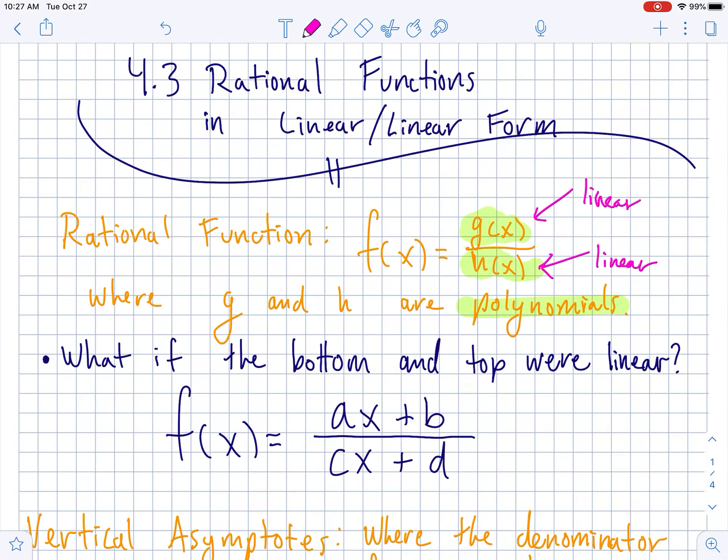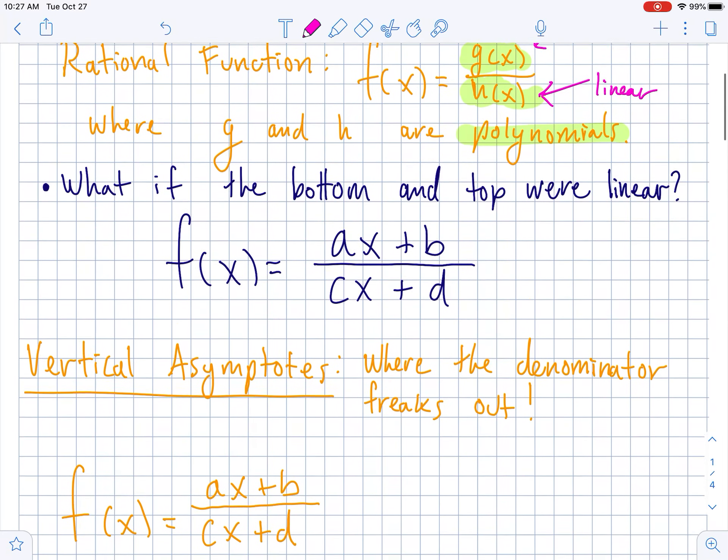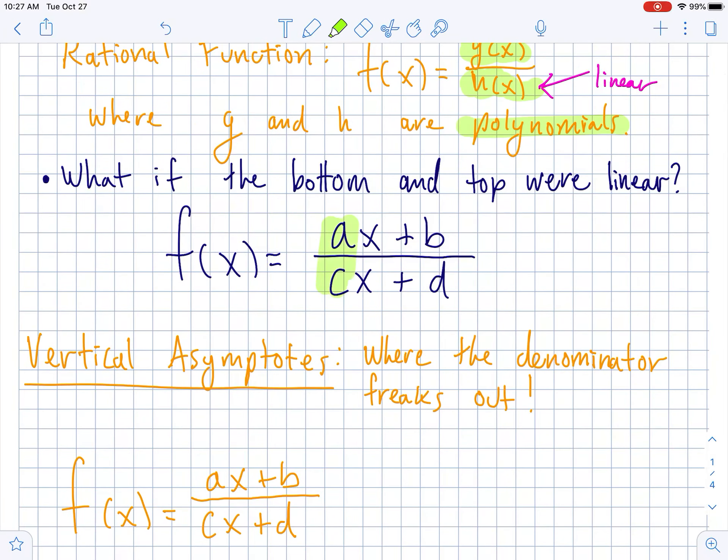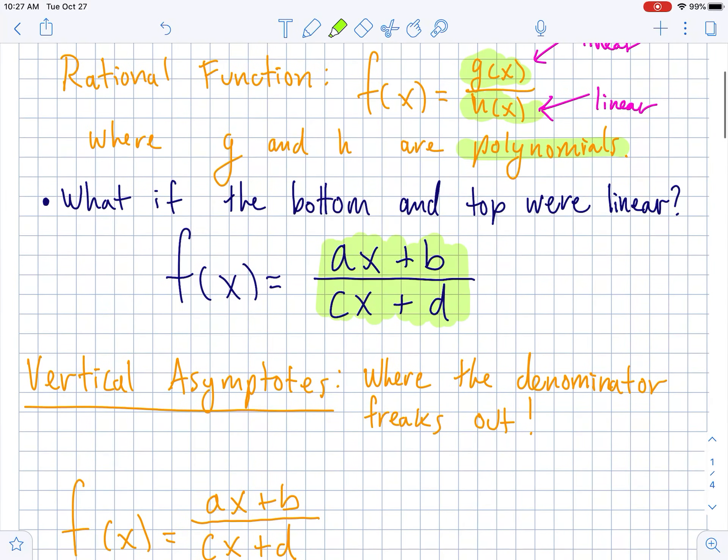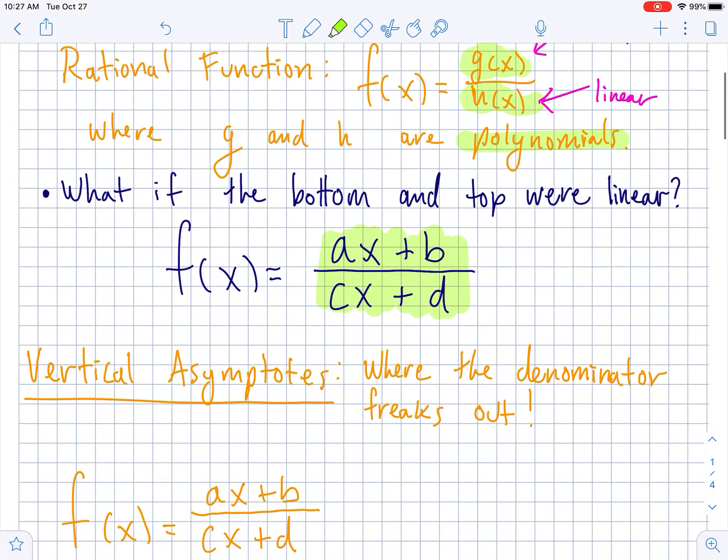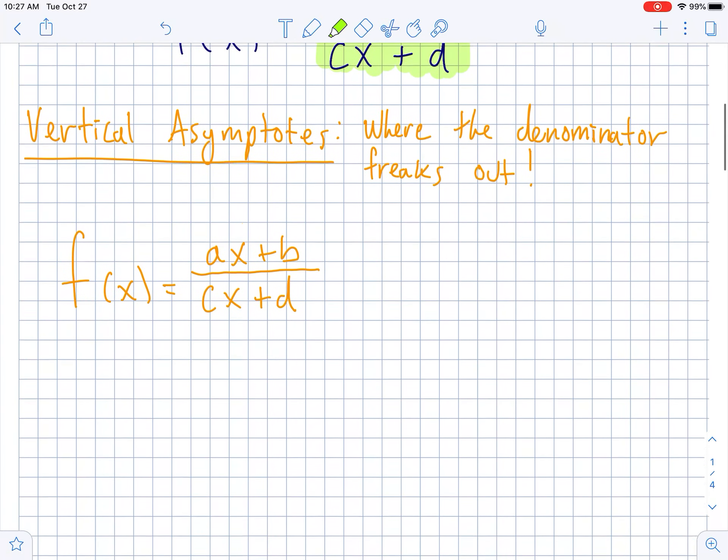So if this top was linear and this bottom was linear, like a y equals mx plus b, you would get a rational function in this form, ax plus b over cx plus d. So that's all the functions we're going to talk about today are in that form, and we're going to talk about how they behave.